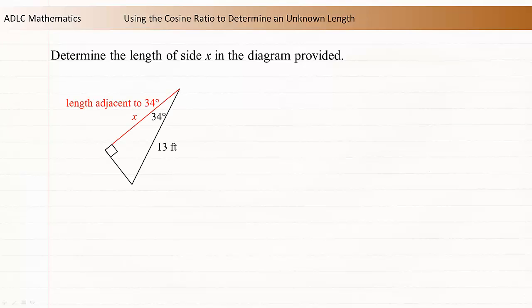Length x is adjacent to the 34 degree angle because it is a short side and one end touches the 34 degree angle.